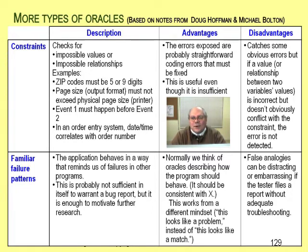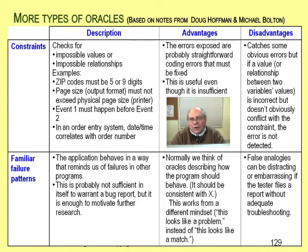If the program tells us that an American postal code has six digits, it's wrong. If it tells us a Canadian postal code has only numbers and no letters, it's wrong — it doesn't matter what the exact code is. These types of tests don't ever confirm that the program works; they only make some types of errors obvious.